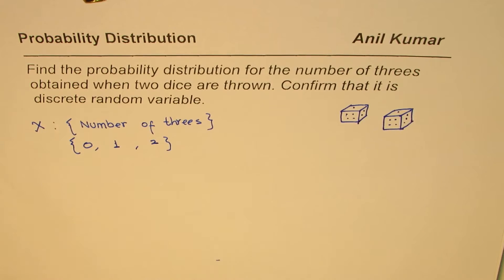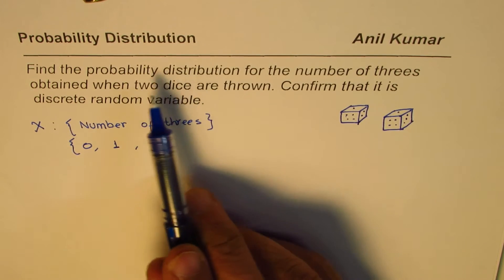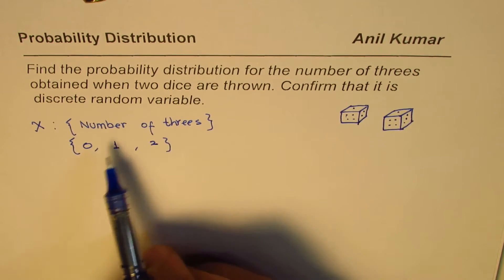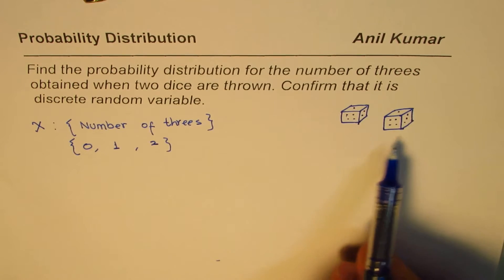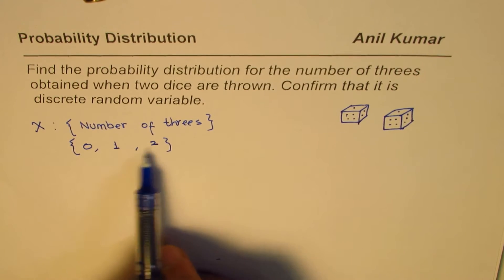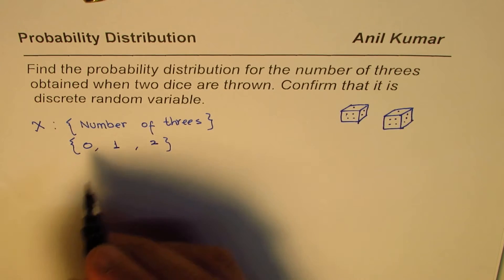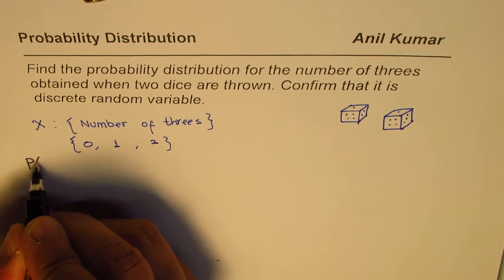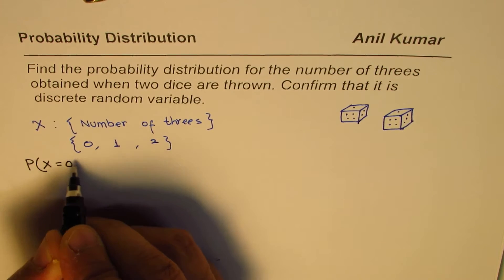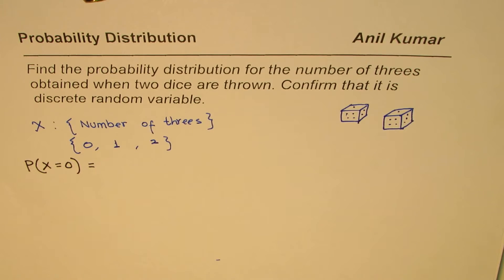When we talk about the probability distribution, we have to find the probability for each outcome. What is the probability that none of them will be three? What is the probability that one of them will be three? And what is the probability that both will be three? Let's work that out. We'll begin with the case where none of them is three, that is P(X = 0).